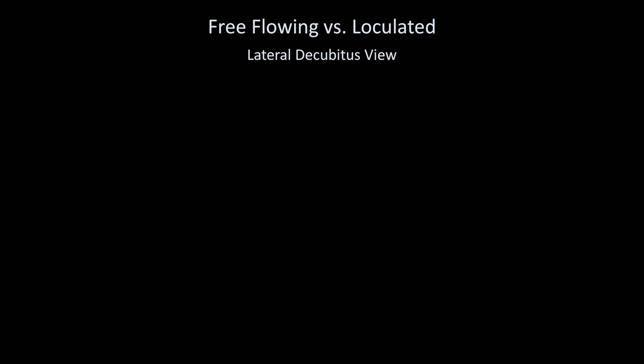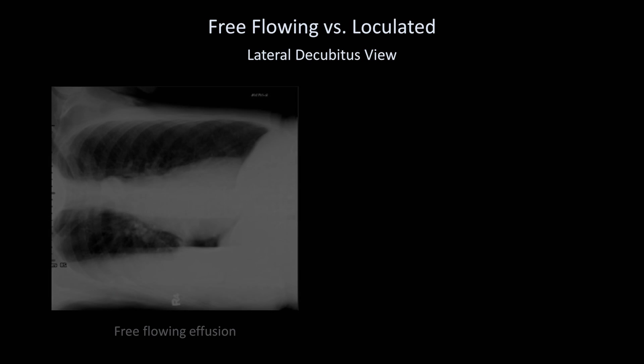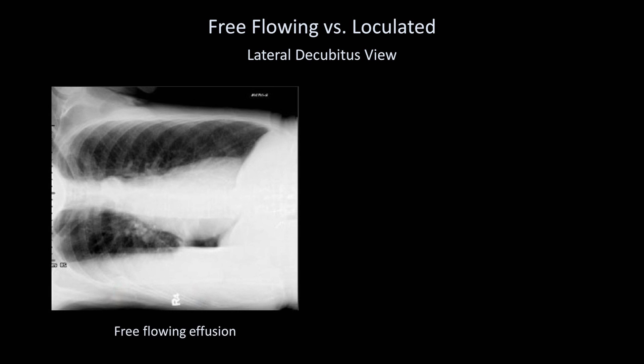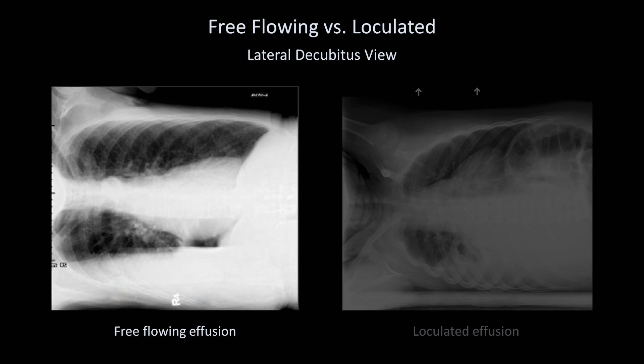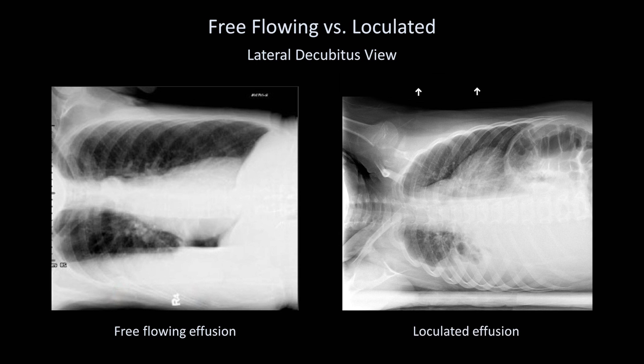In addition to the PA view, clinicians will often request a lateral decubitus view to assess how free-flowing an effusion is. In this view, the patient lies on his or her side with the effusion side down. If the effusion is free-flowing, it will shift due to gravity. If loculated, it will either not shift at all or shift only partially, as seen here.